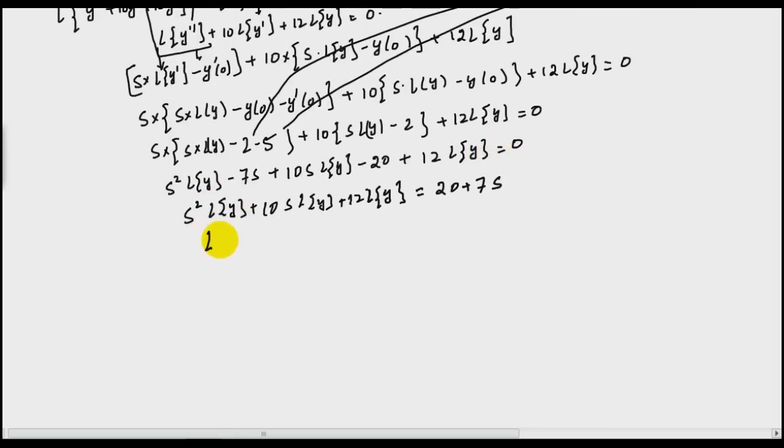Now what I can say: Laplace of y multiply by s square plus 10s plus 12 is equal to 20 plus 7s, or Laplace of y equals 20 plus 7s divided by s square plus 10s plus 12.